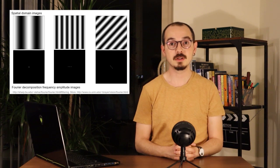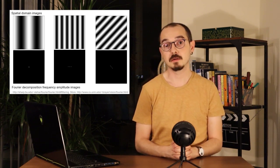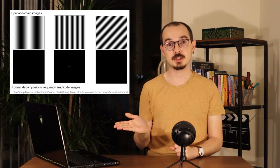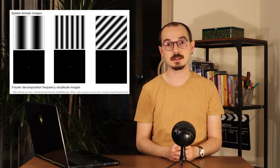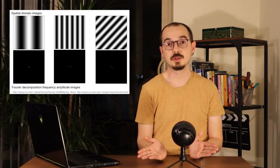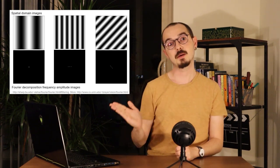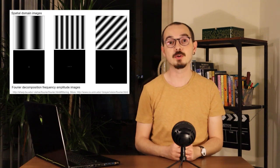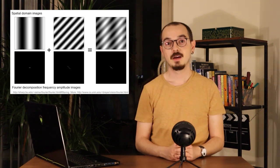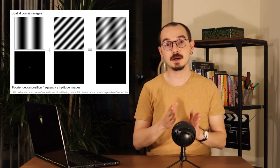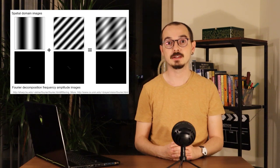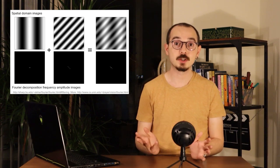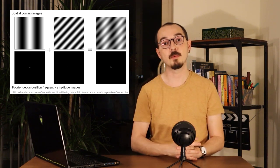In two dimensions the simple sine waves also become two-dimensional. Some of them are just in the X dimension and some are in the Y dimension, and this should be visible in the frequency domain representation. With two dimensions we can also get waves with both X and Y frequency components. You can add two different waves to get a third wave, and in the frequency domain they are also added up to give you the complex frequency.